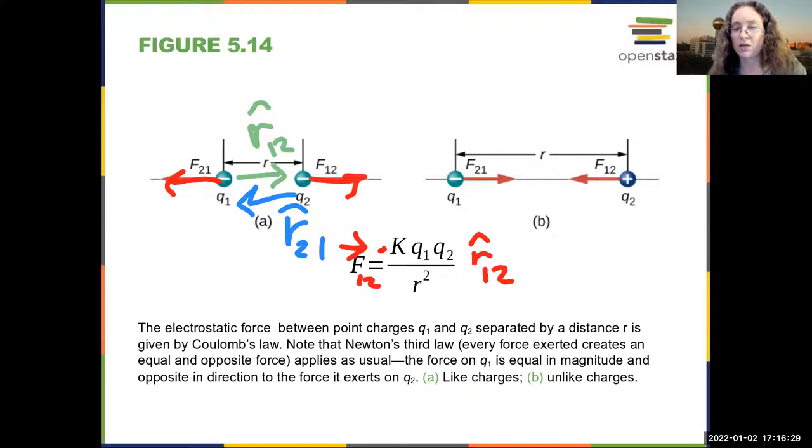I can do the same exercise for a positive charge and a negative charge. So now my unit vector from one to two is in this direction. The two charges have opposite signs, so my vector version of the force says that the force is in this direction. And then here, my unit vector from two to one is in this direction. And again, the signs of the two charges are opposite, so the net force is in the same direction as the unit vector.